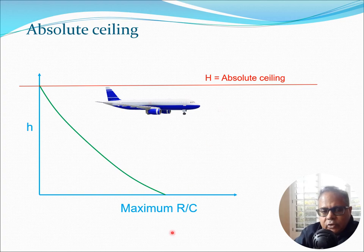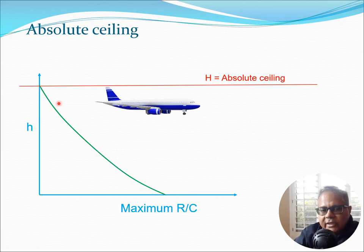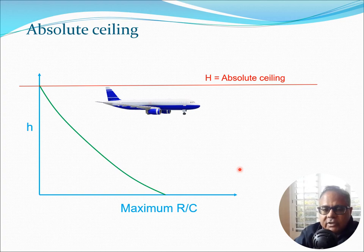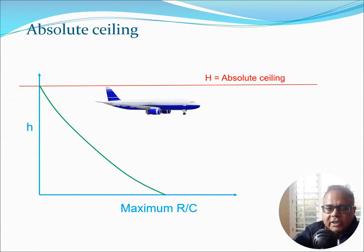Let's look at this pictorially. For any aircraft flying at a particular height, we can obtain the maximum rate of climb for every given height. Starting at sea level, we have the maximum rate of climb, and as we go up, this decreases. As the height increases, the maximum rate of climb decreases, and at a particular height the maximum rate of climb becomes zero. That is the absolute ceiling — at this point you cannot climb; all you can do is fly in steady level flight.